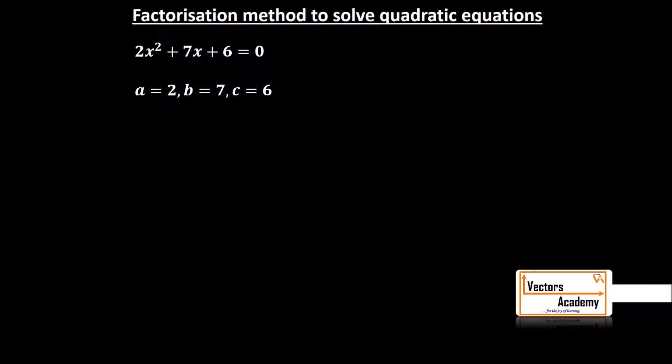Now what we need to do is we need to multiply a with c, that is 2×6 which will give us 12. Now we have to identify two factors whose multiplication is 12 and whose addition is the middle factor, that is b, that is 7. The numbers could be 4 and 3.